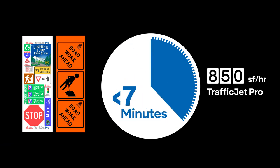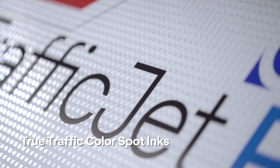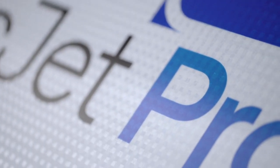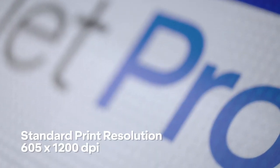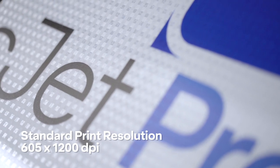On TrafficJet Pro, this print job would take just under 7 minutes as we are printing at 850 square feet per hour. This is the fastest traffic sign printer on the market. Take a look at the true traffic color spot inks and the print quality from the printer. On TrafficJet Pro, standard print resolution for traffic sign production is 605 by 1200 dpi, which is over twice the resolution of the next closest competitor.